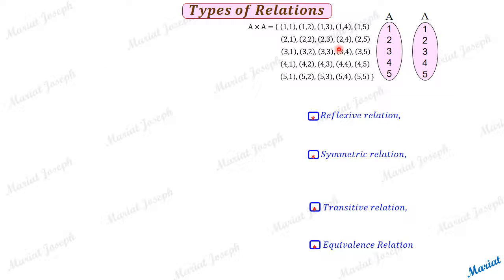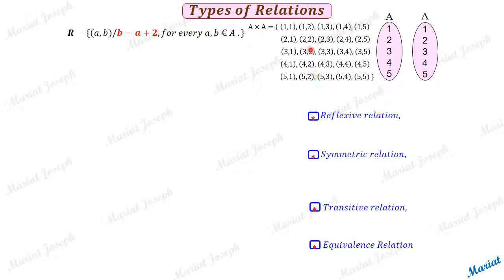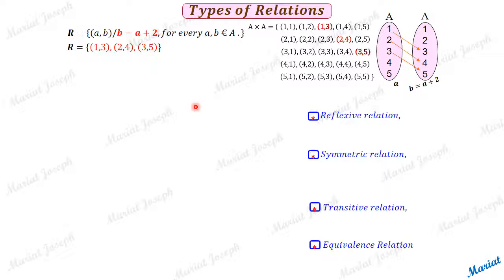Let's take an example — a subset we are going to make of A cross A. Consider this subset given in set builder form: every pair (a, b) should be such that b equals a plus 2, for every a and b of set A. The pairs satisfying this condition are: (1,3), (2,4), and (3,5). This is the roster form of the relation. The set builder form and arrow diagram are also shown.